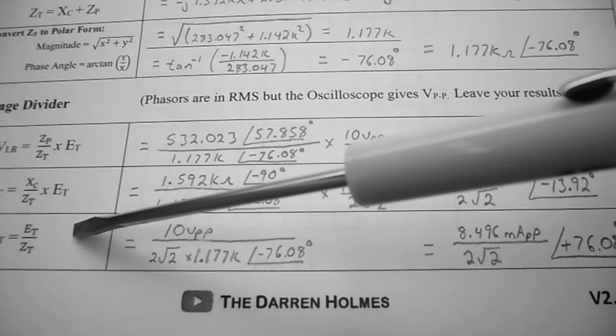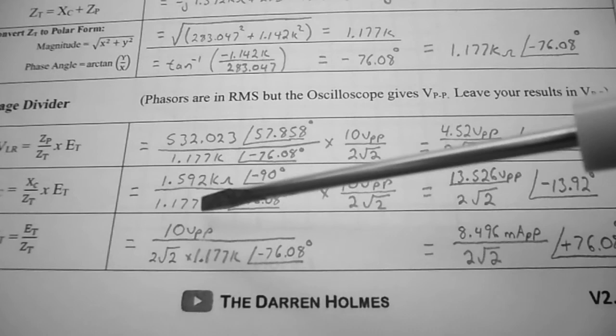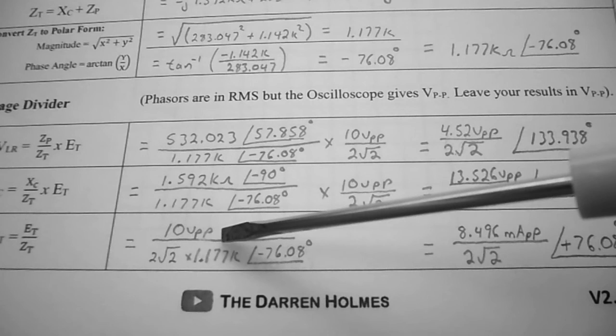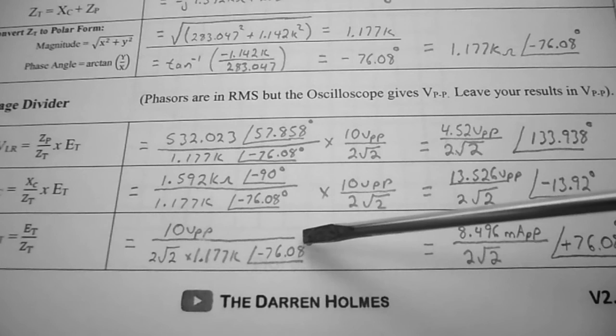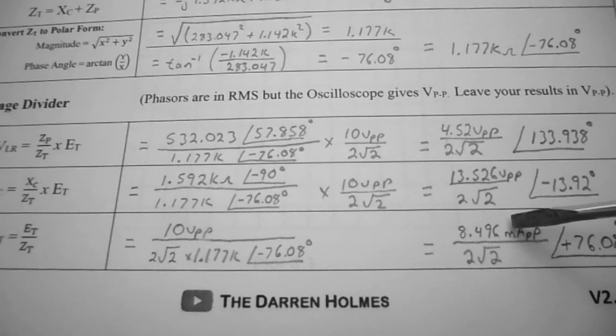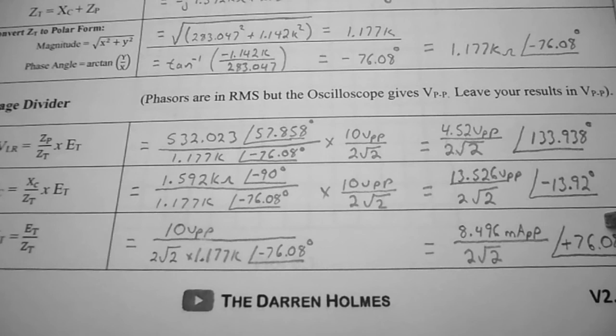Finally, to calculate I total, it equals E total over Z total. That's 10 volts peak to peak divided by 2√2, divided by 1.177k at minus 76.08 degrees. That equals 8.496 milliamps peak to peak at an angle of positive 76.08 degrees.